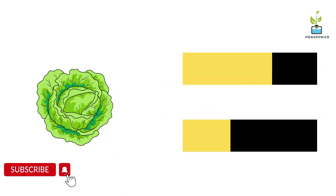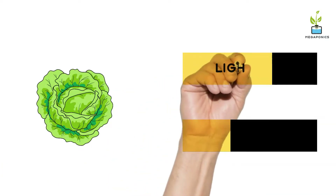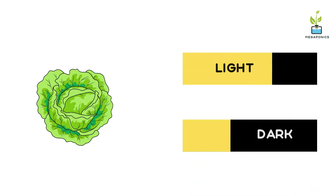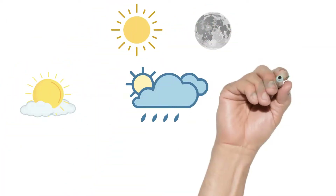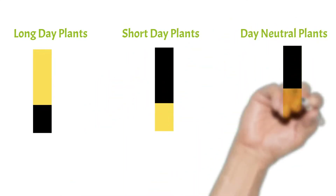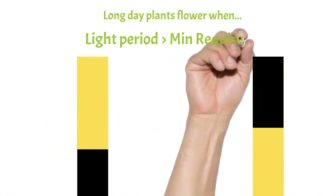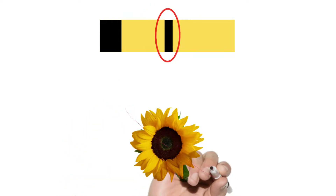Photoperiodism means the reaction of plants to the length of the light and dark period. Plants use light to track time — they can tell the time of day and time of year by sensing various wavelengths of sunlight. There are three categories: long day plants, short day plants, and day-neutral plants. Long day plants flower when the light period is longer than the minimum requirement; if interrupted by darkness, flowering is inhibited. Examples include hibiscus, potato, radish, spinach, passion fruit, banana, and apple.